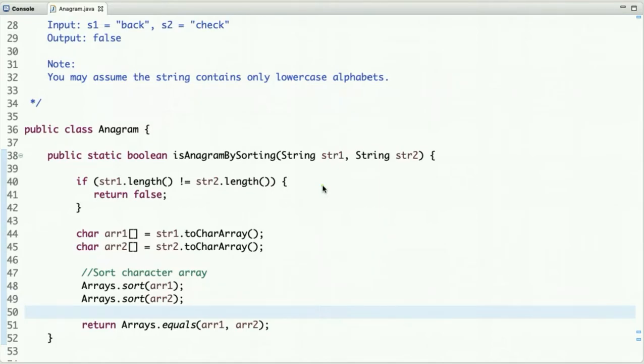Our first example was 'car' and 'rac'. If we sort this string, then both become 'acr'. If we compare them, both strings are equal, so it's an anagram. The time complexity of this approach is O(n log n).